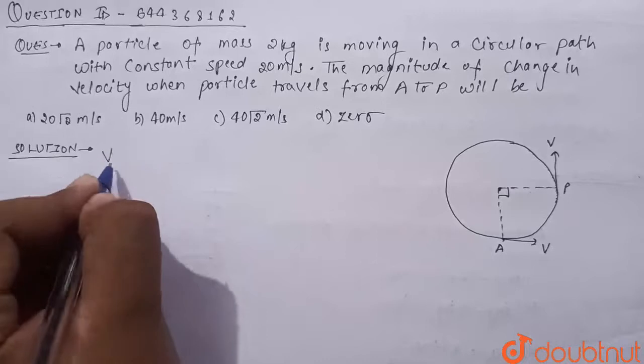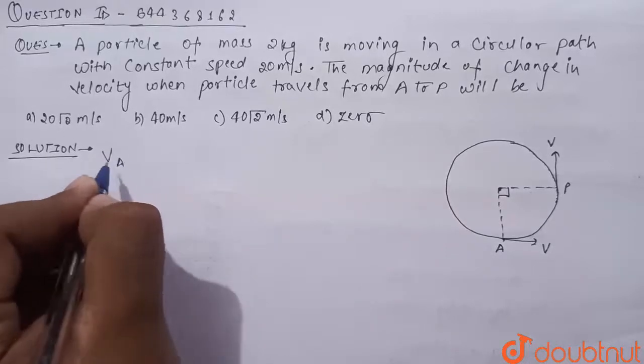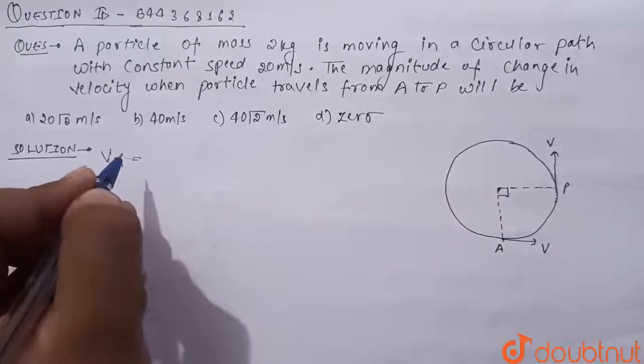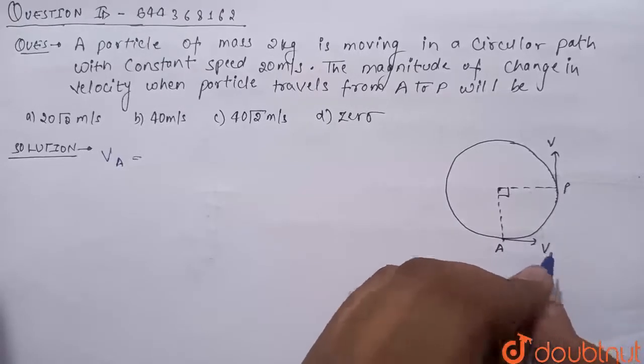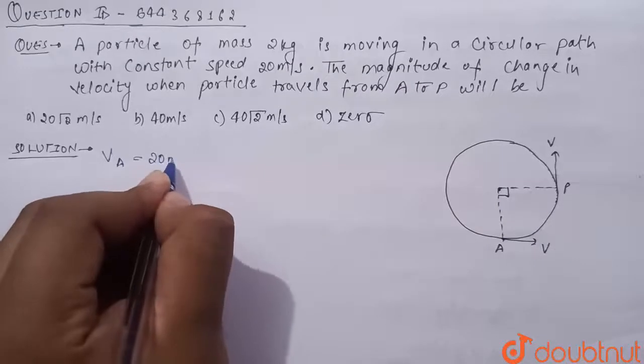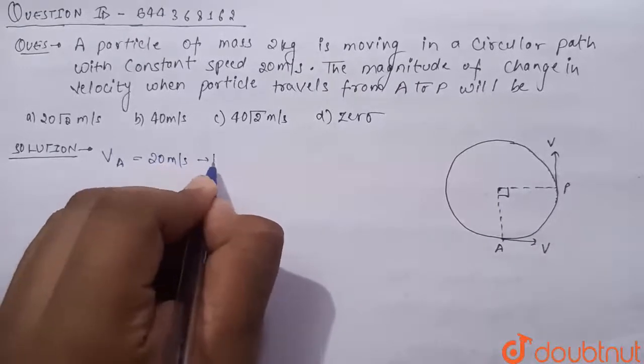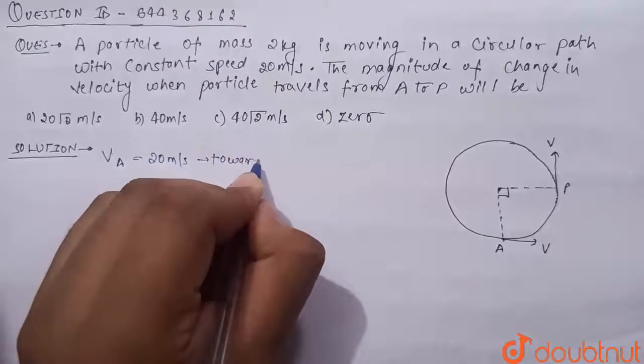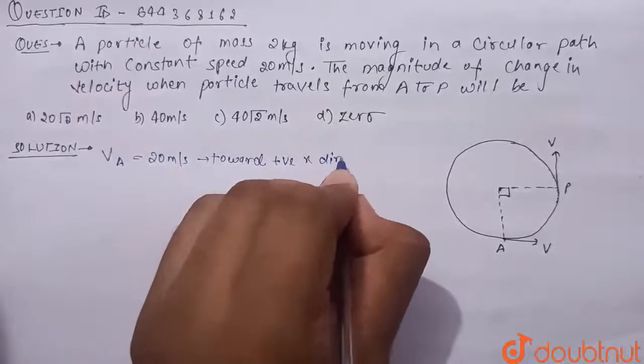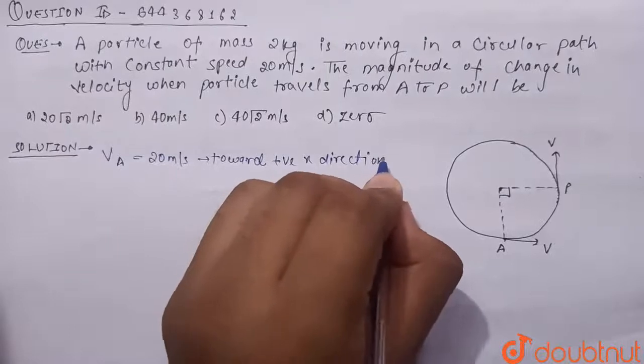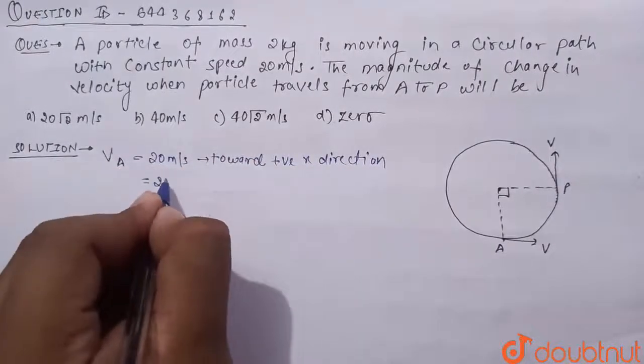So what is velocity of particle at point A? Velocity of particle at point A is 20 meter per second toward positive x direction, or it can be also written as 20i cap.